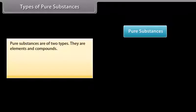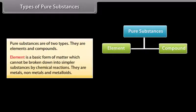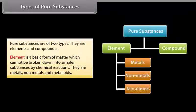Types of pure substances. Pure substances are of two types. They are elements and compounds. Element is a basic form of matter which cannot be broken down into simpler substances by chemical reactions. They are metals, non-metals, and metalloids.